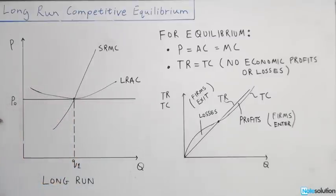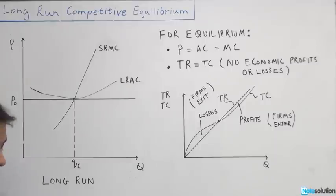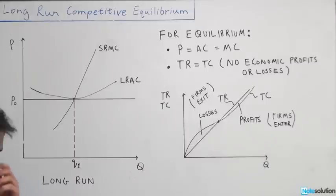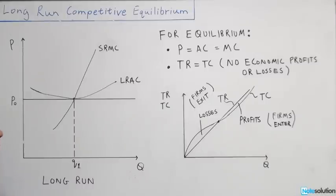The question says: in a long-run equilibrium, the marginal firm has — and then we have some options. The first option is price equals average cost, or price equals average total cost.